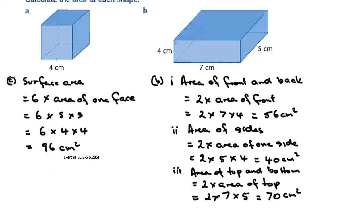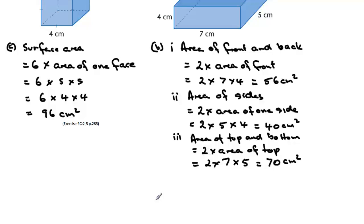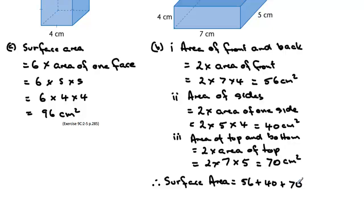Now putting in the total area: the surface area is equal to all of them added up — 56 plus 40 plus 70 — giving us 166 centimetres squared. This is doing it without a net, but you have to be so careful that you're getting all the measurements correct and not leaving any of the parts out.